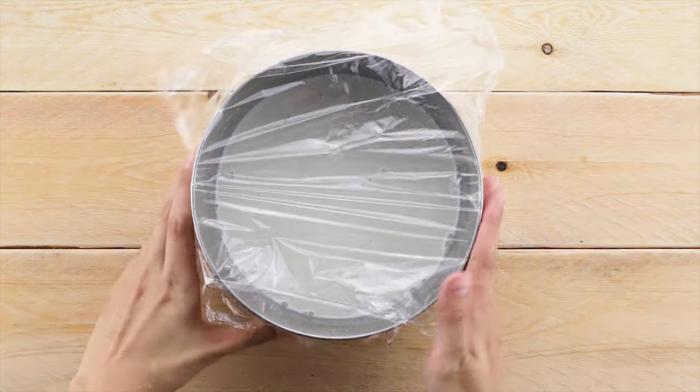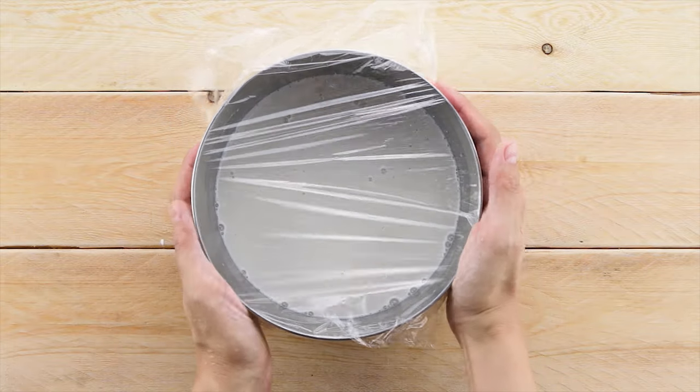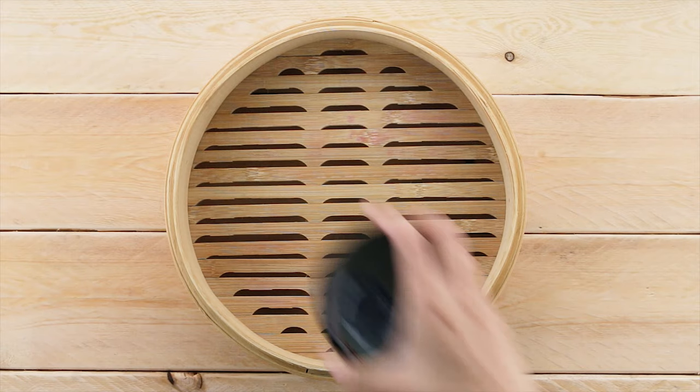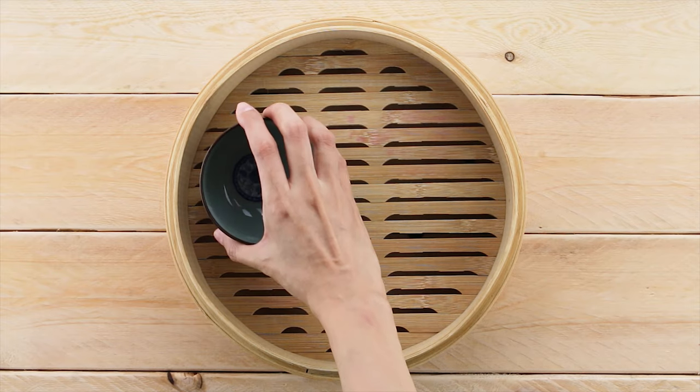Cover the bowl with plastic wrap and leave for 6 hours. Heat the bowls in the steamer.